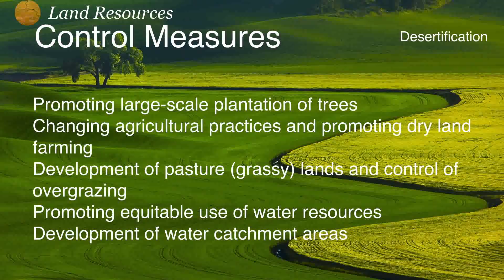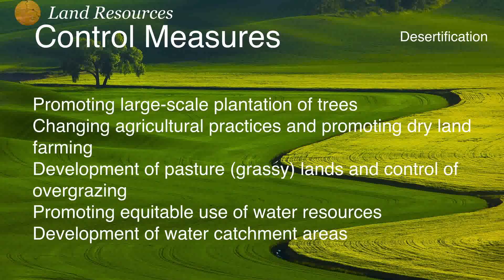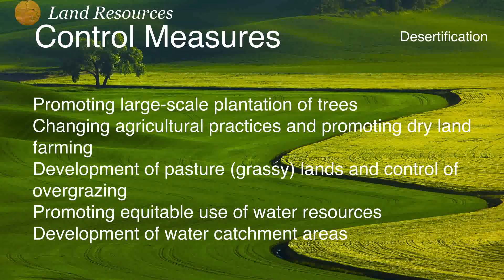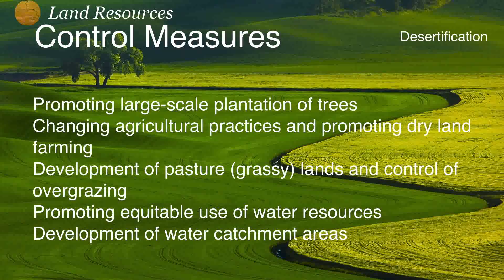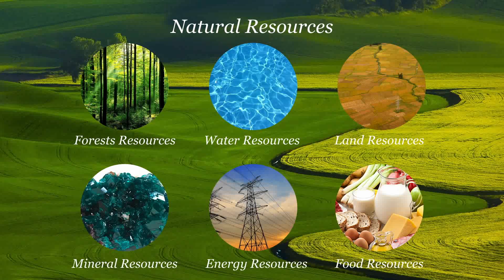To control desertification, we should promote large-scale plantation of trees, change agricultural practices, and promote dry-land farming. Development of pastures and control of overgrazing will also help. Promoting equitable use of water resources — using only the required amount of water — and developing water catchment areas such as lakes and ponds to collect rainwater are also effective measures. That covers all topics on land resources.